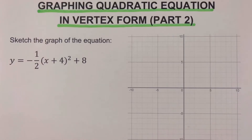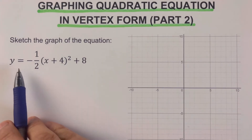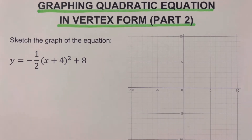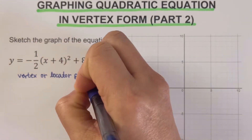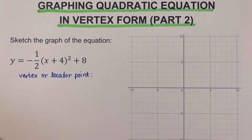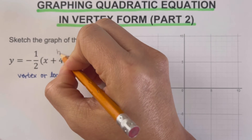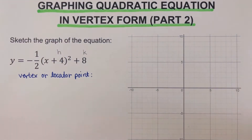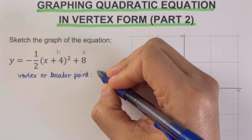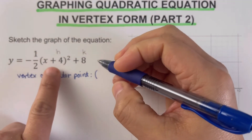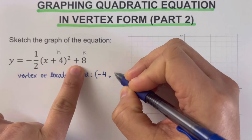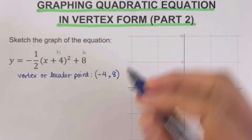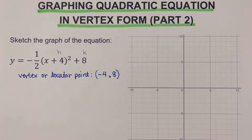Going back to the problem, we're supposed to sketch the graph of this quadratic equation. The first step is to determine the vertex or locator point, represented as (h, k). Here's a trick: we switch the sign of h, giving us negative four, and keep the sign of k, giving us positive eight. So our vertex coordinates are (−4, 8).